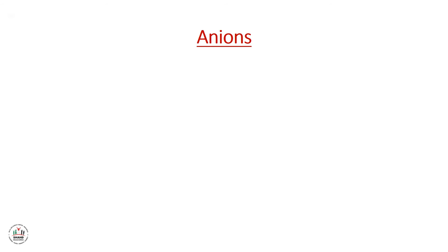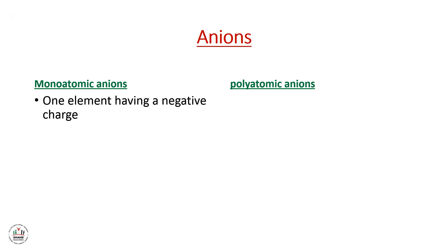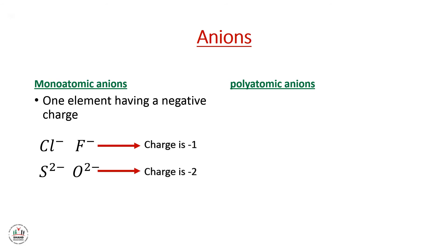In each type of ions we also have two different types. Starting with anions: we have monoatomic anions and polyatomic anions. In monoatomic anions, one element has a negative charge. For example, Cl⁻ and F⁻ have a charge of minus one; S²⁻ and O²⁻ have a charge of minus two; and N³⁻ and P³⁻ have a charge of minus three.